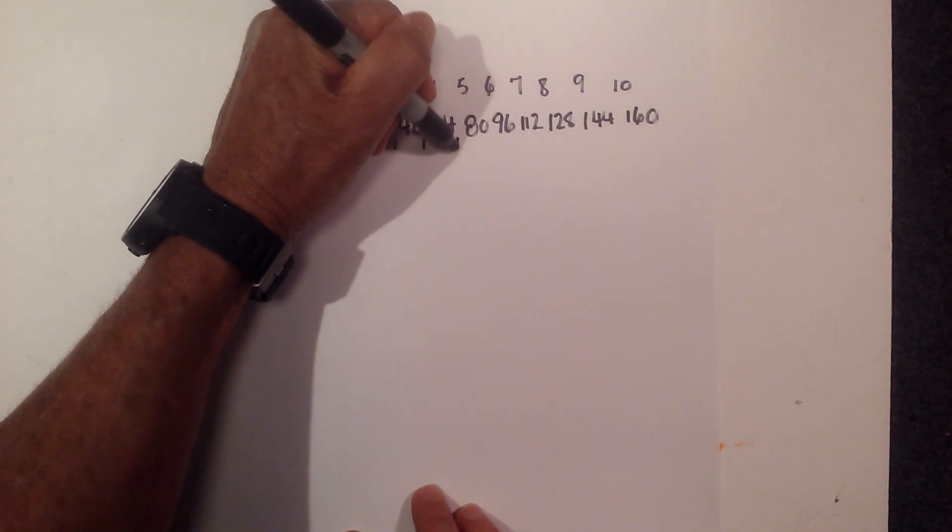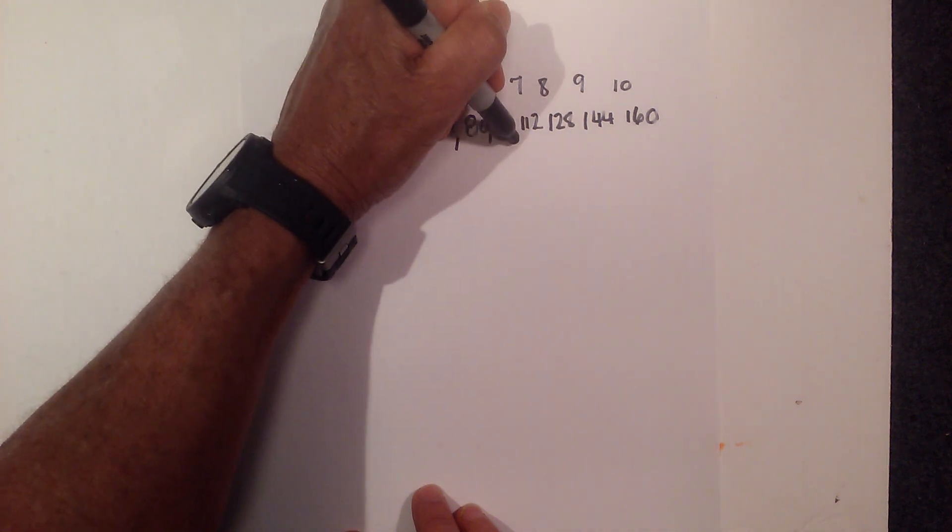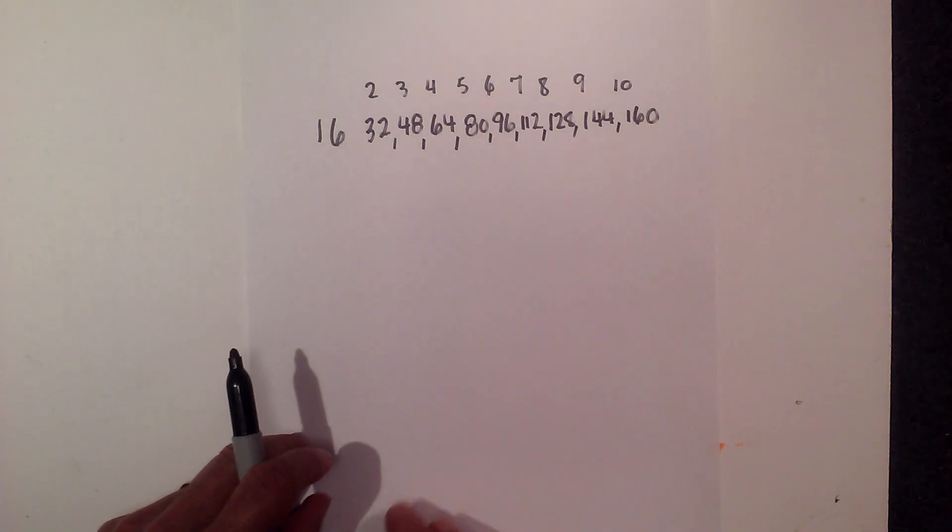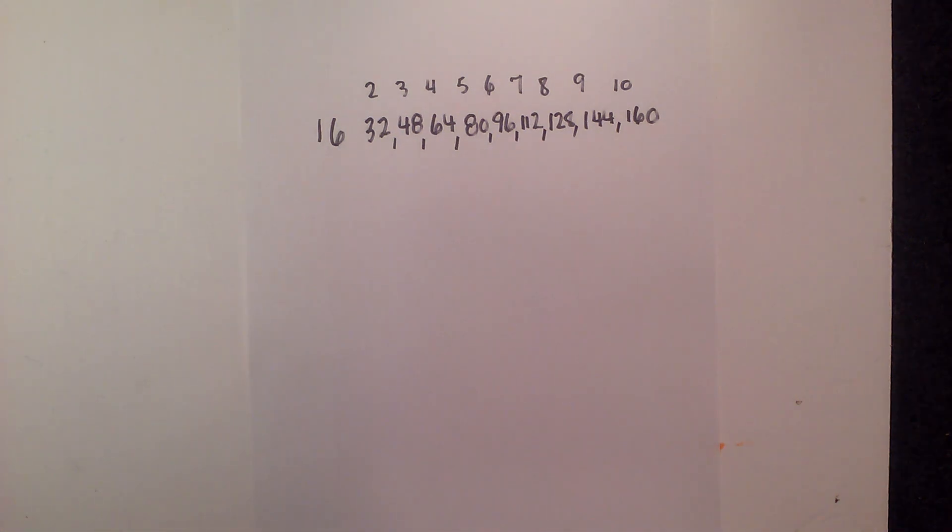16 times 9 is 144 and then 16 times 10 is 160. So here are the multiples of 16: 32, 48, 64, 80, 96, 112, 128, 144, and I'll have them listed in the show notes below.